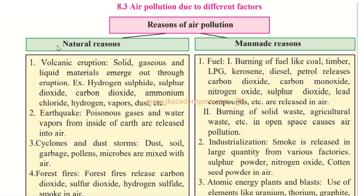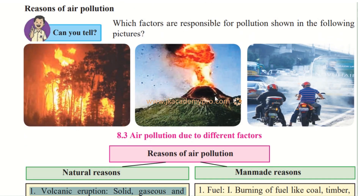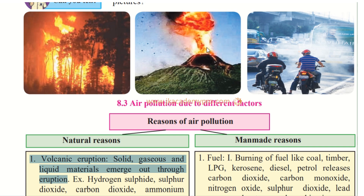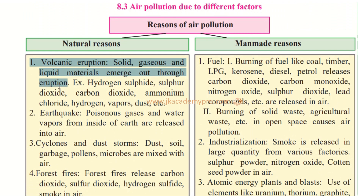Now, reasons for air pollution. Natural causes: first is volcanic eruption. Solid, gas, and liquid materials emerge through eruption. When a volcano bursts open, all these materials come out. For example, hydrogen sulfide, sulfur dioxide, carbon dioxide, ammonium chloride, hydrogen vapors, dust, etc. are released. All these are factors that come out during a volcanic eruption.